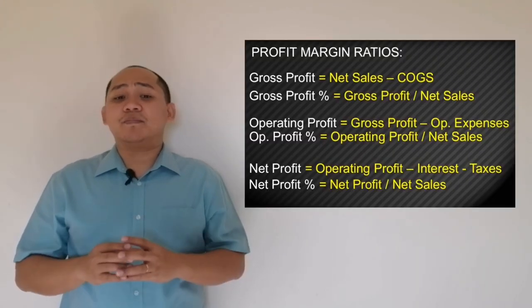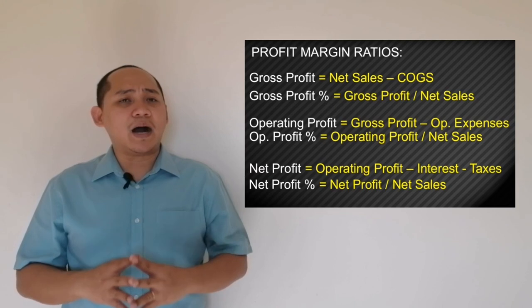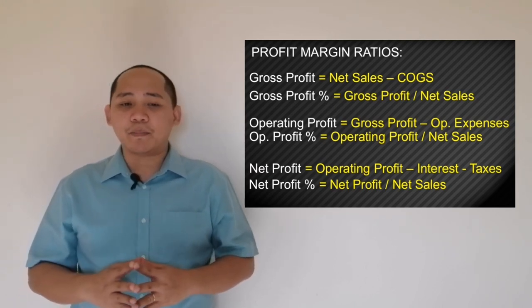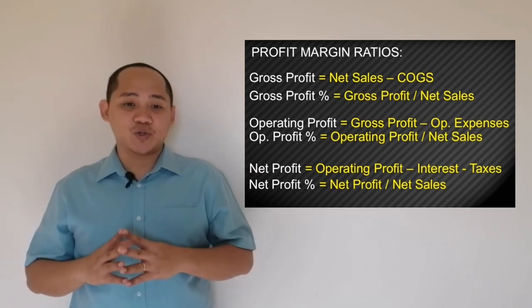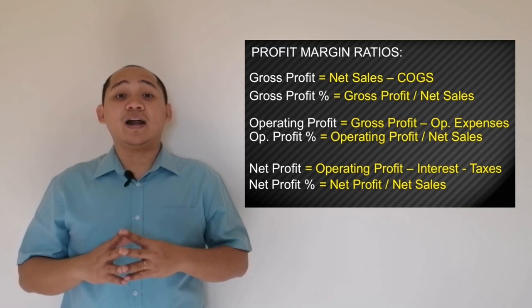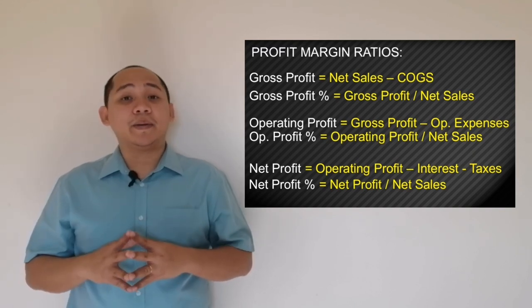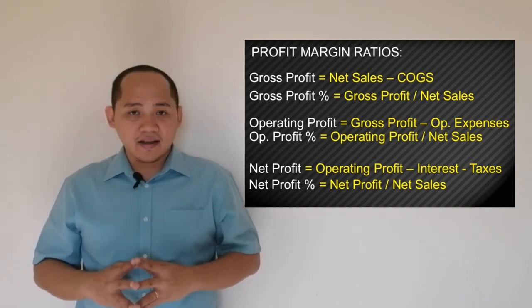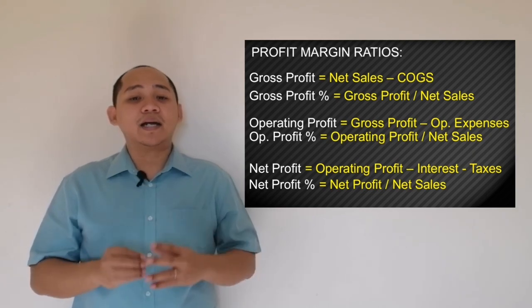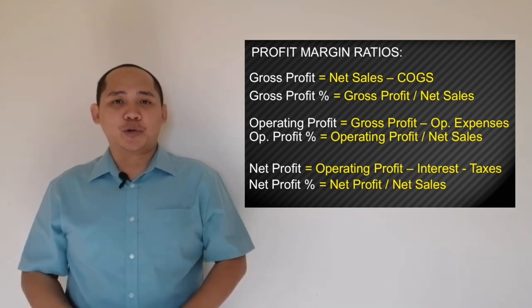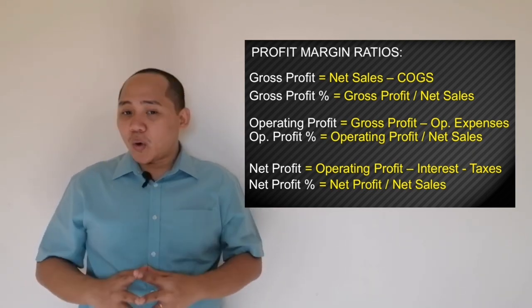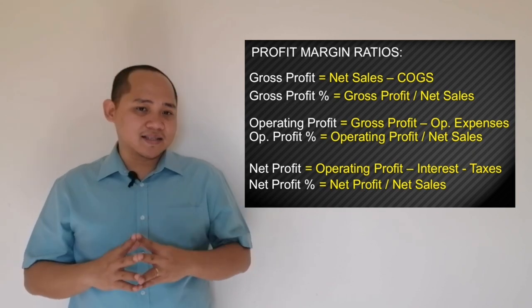For gross profit margin, it measures how much a company can mark up sales above cost of goods sold. The formula is: gross profit divided by net sales. In margin ratios, the denominator is always net sales.